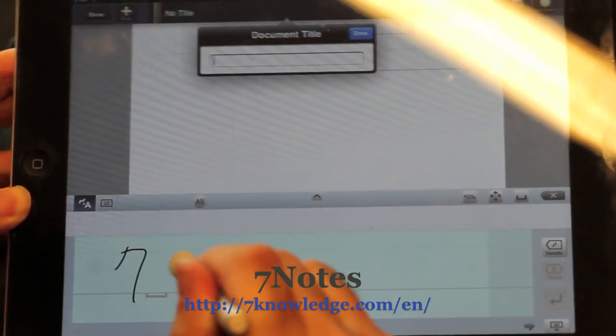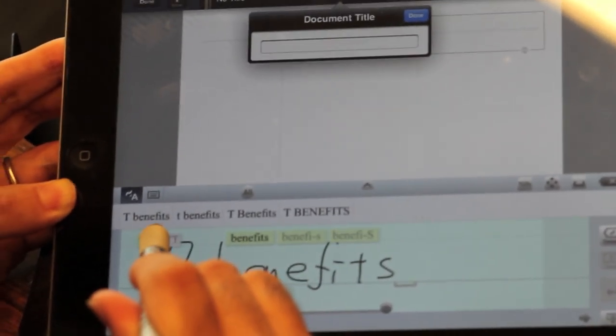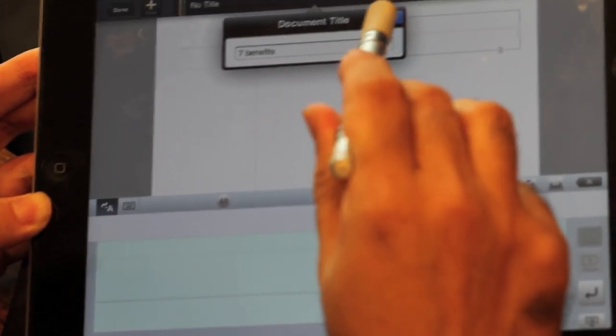I guess this is just a quick little demo of an application called SevenNotes. It's from Japan. It's available for iPhone and iPad from a company called Metamoji.